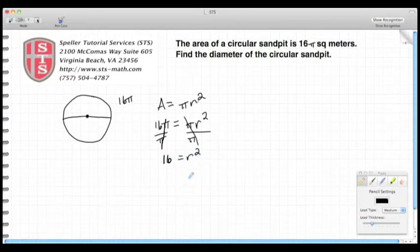So now I have 16 = r². I need to take the square root of both sides to change that r² to just an r. The square root of r² is just r, and the square root of 16 is